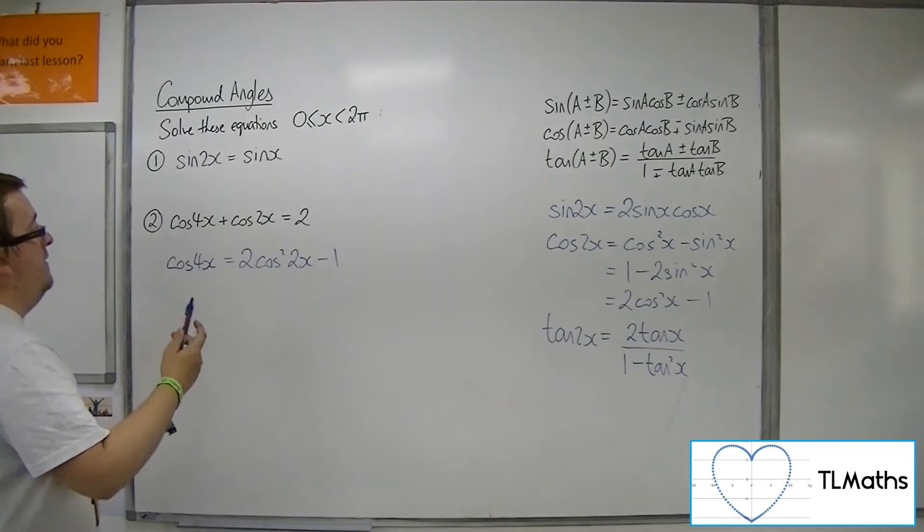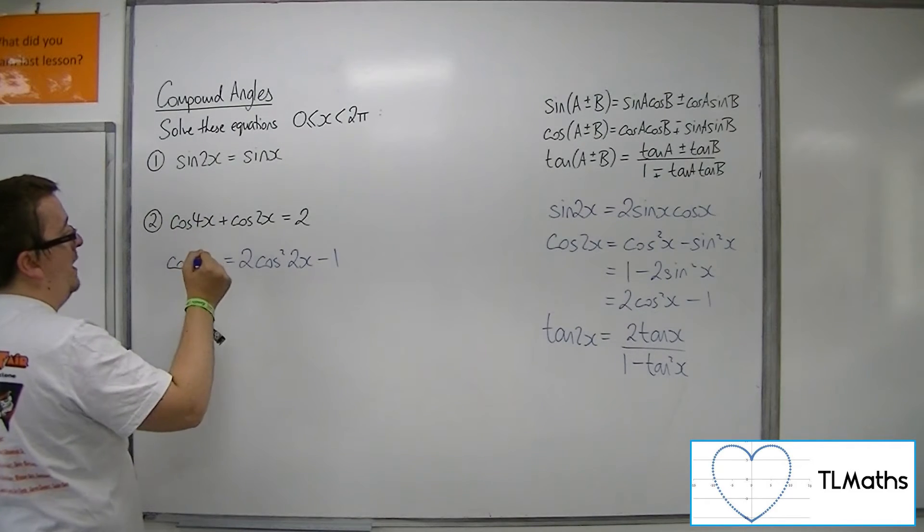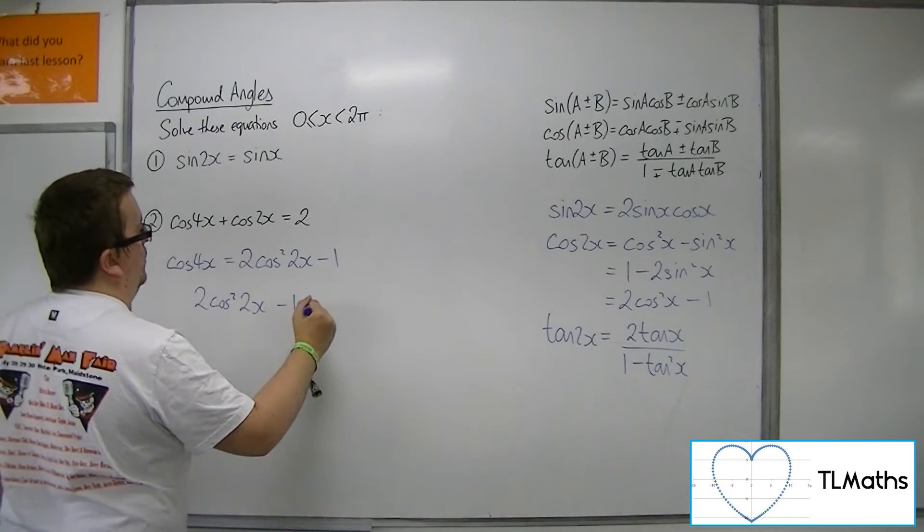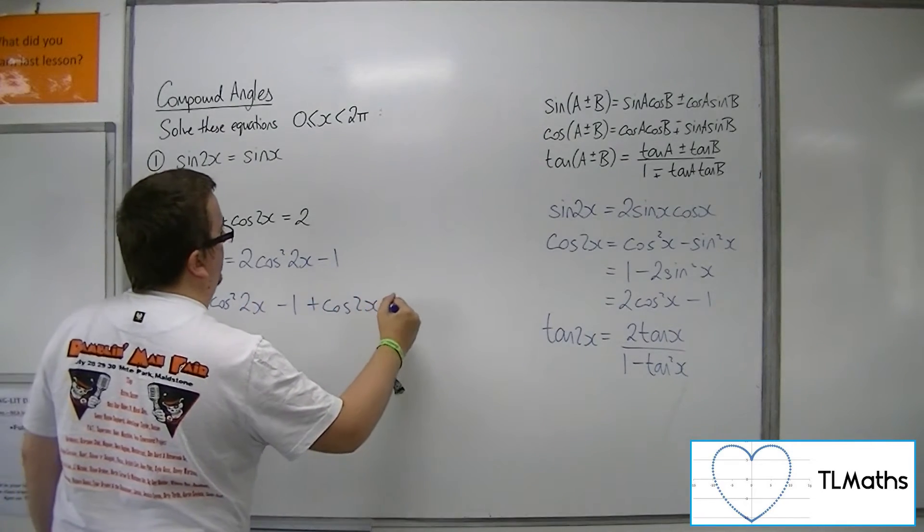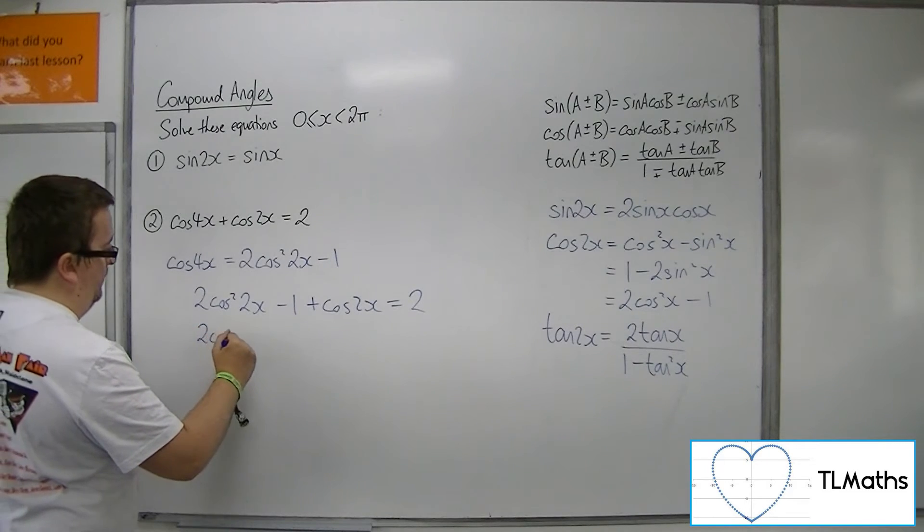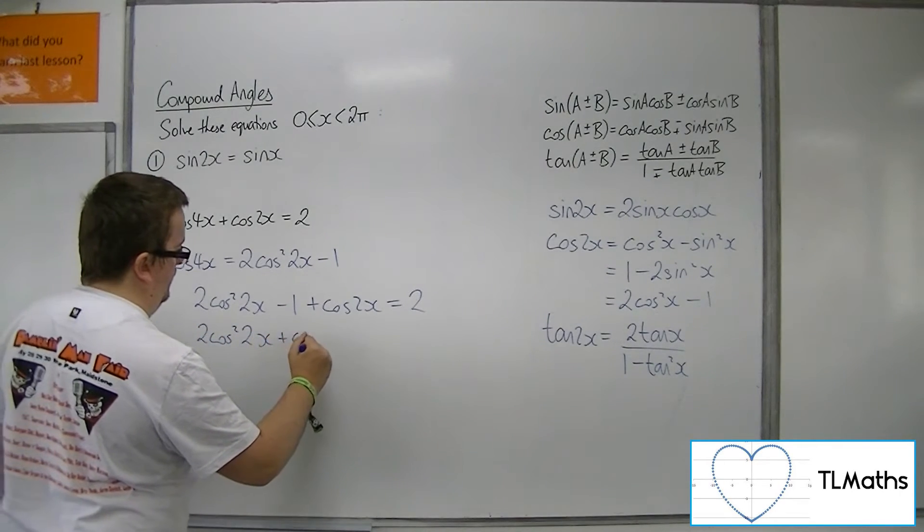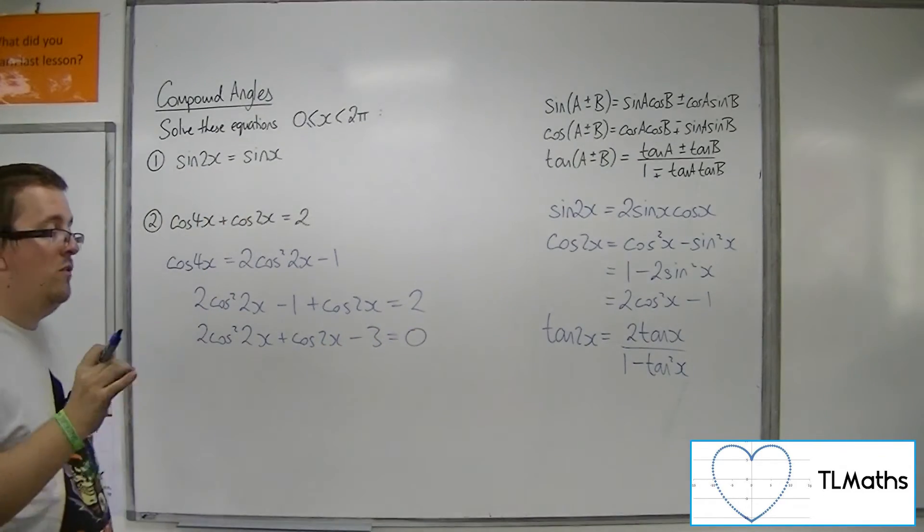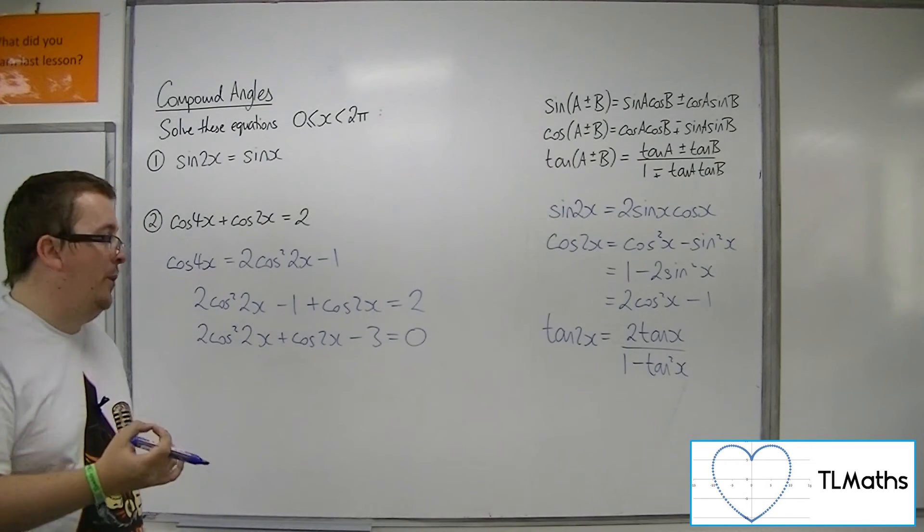So what I've then got is a replacement for cos of 4x, which is going to give me an equation with cos 2x's in. So if I tidy this up, take the 2 from both sides, I now have a quadratic equation in cos 2x.